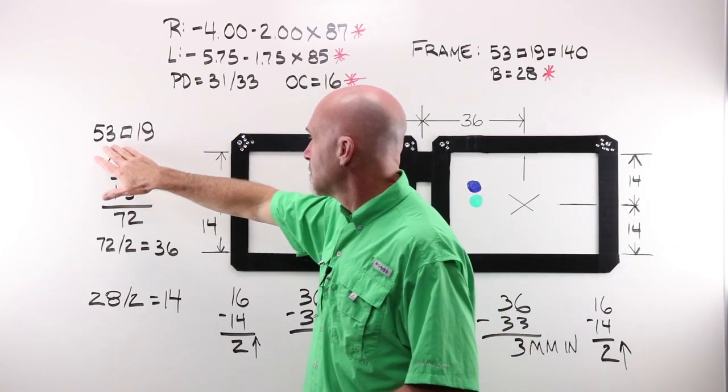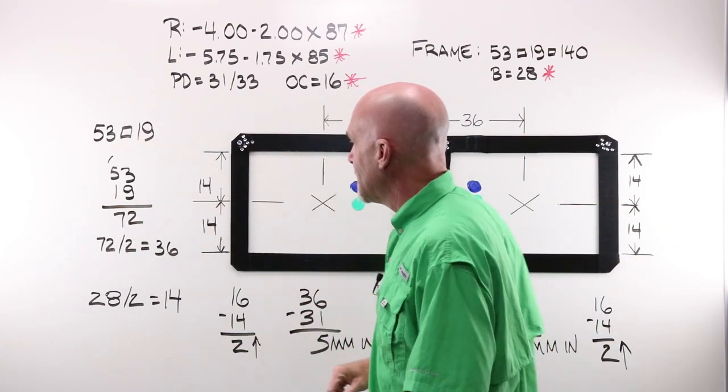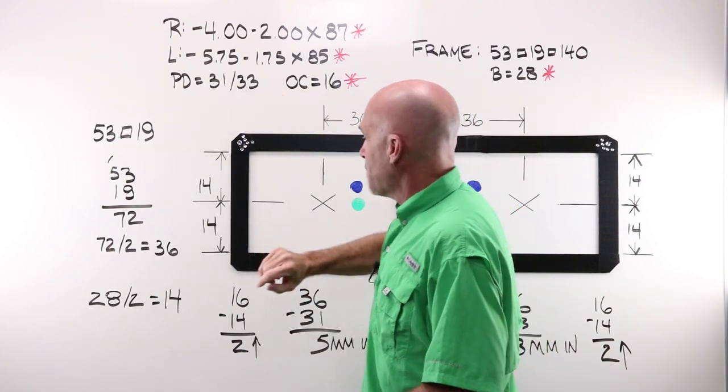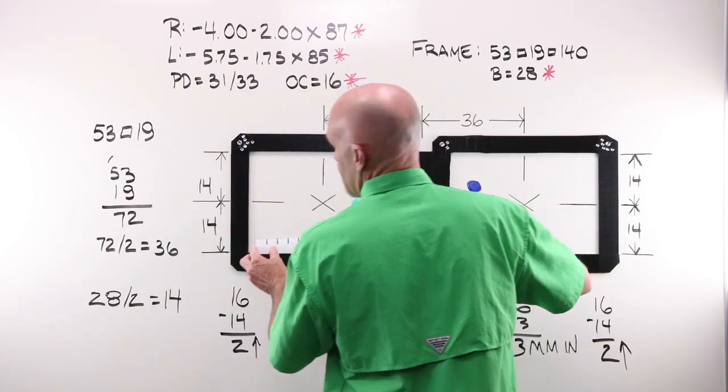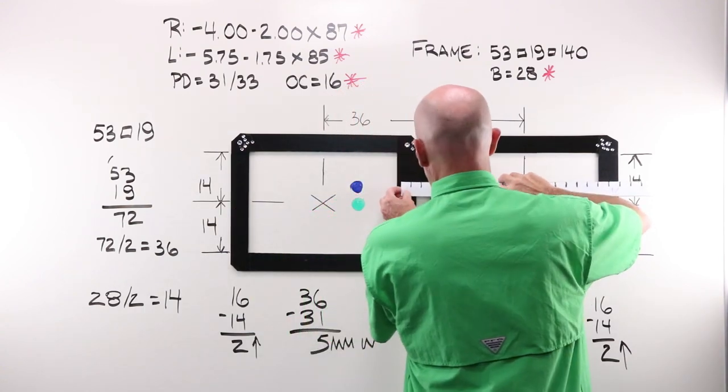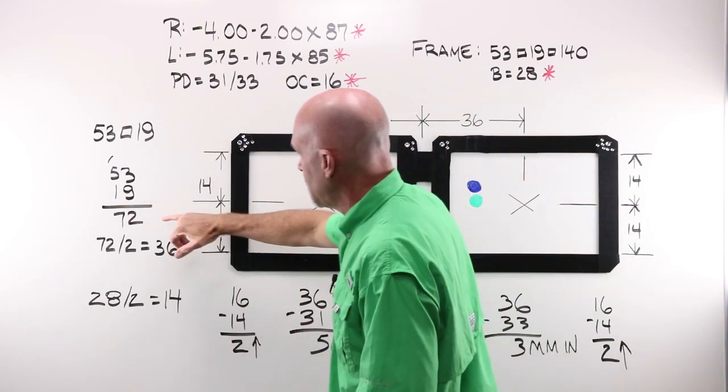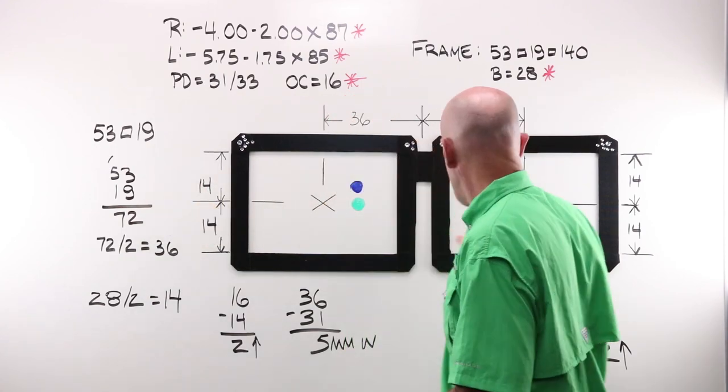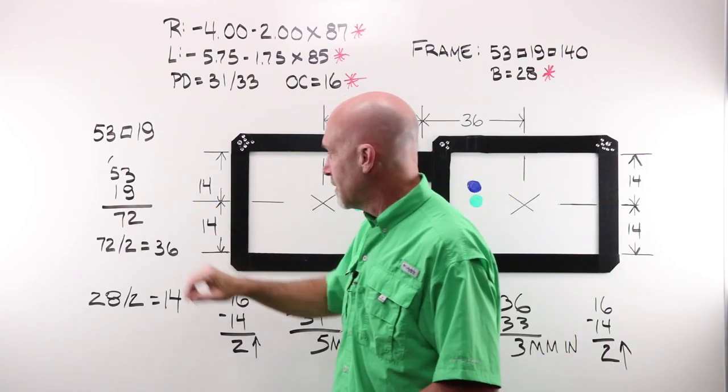I have SuperFrame. SuperFrame has a boxing system measurement of 53 by 19. I've got enough power here, I'm going to double check that, just to make sure that that frame is correct. 53 by 19, we're good.